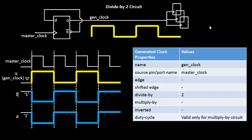Hello everyone. Let's continue our discussion on generated clocks for a divided-by-2 circuit. In the last video we came up with a relationship between two waveforms where the relationship was divided by 2. This was straightforward because it was a binary division of the main clock frequency. So is there any other relationship we can find between this master clock and this particular generated clock?